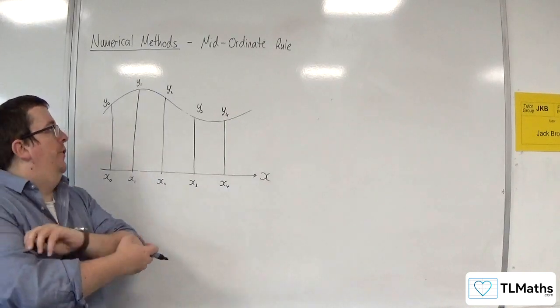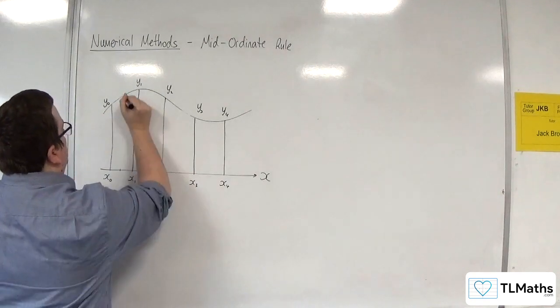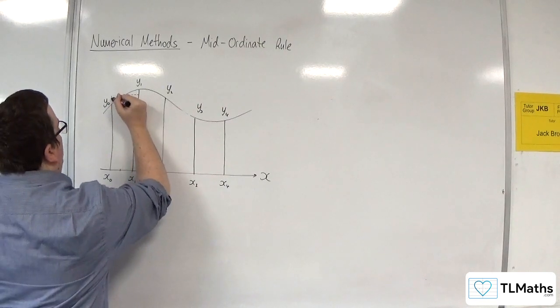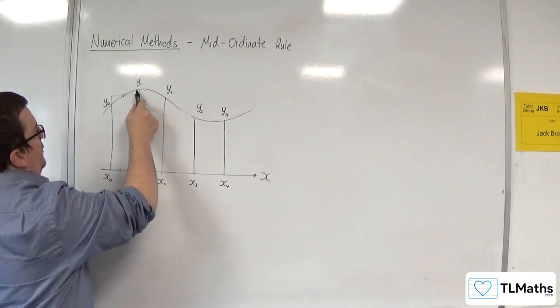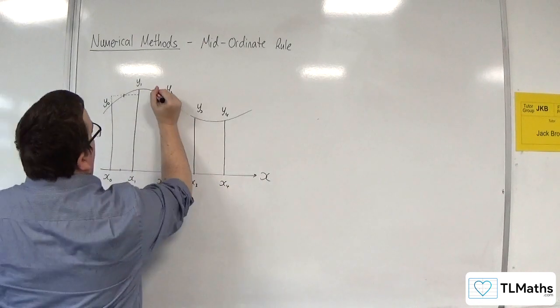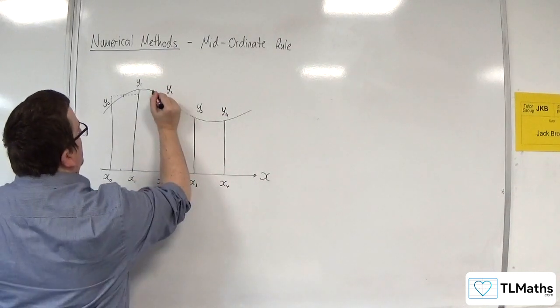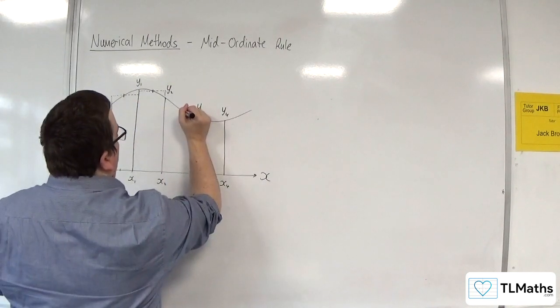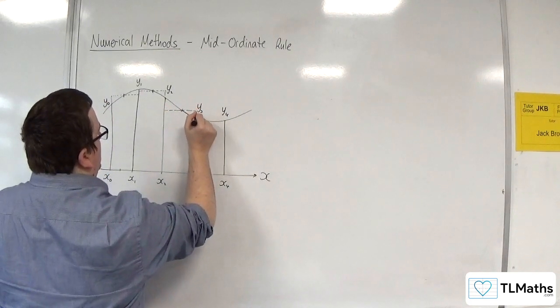What the mid-ordinate rule will do is find that halfway point and make your rectangle based on that value. You can see that it tries to estimate the area under that curve by finding the area of this rectangle. Likewise, the next one will find the midpoint between x₁ and x₂, find the corresponding y-value, and then use that rectangle. This one will find the halfway point there and that rectangle.